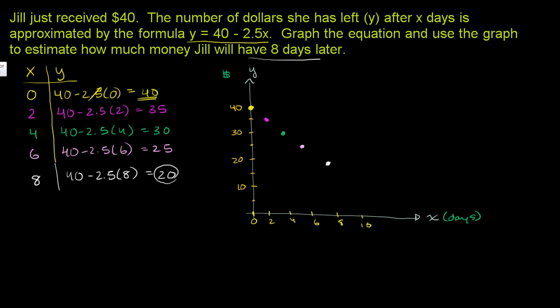And so we plotted those points, and we could connect them. We could actually just, if we had a nice ruler, connect two of those and we would have the line. Our line would look something like that. That shows how much she has after every day. And we're done. We've graphed the equation. We know she'll have $20 left after eight days.